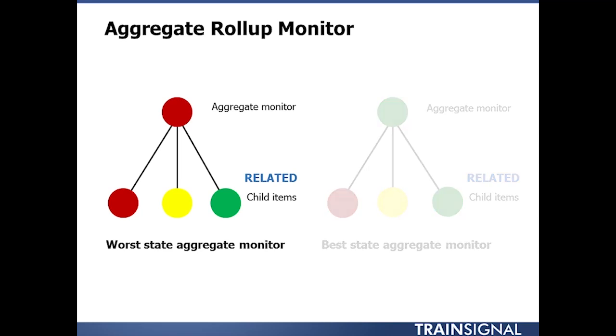The most common type is to use what's called a worst state health policy. In this case, the aggregate monitor matches the state of the child monitor that has the worst health state of the group. So if you're monitoring 150 items with an aggregate monitor,